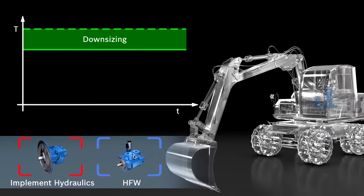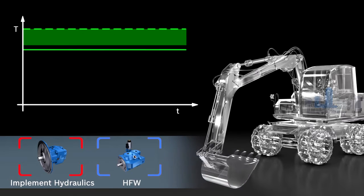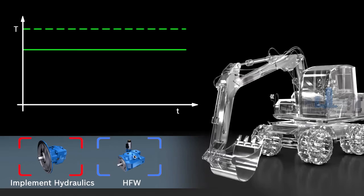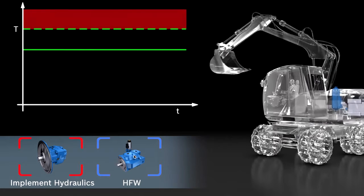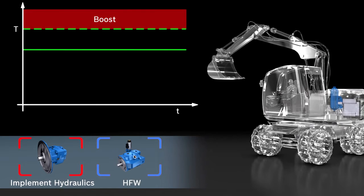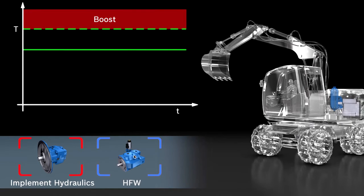Should power smoothing and thus a downsizing be of secondary importance, HFW can be used alternatively for engine rated power. This boost function means more overall power while using the same combustion engine.